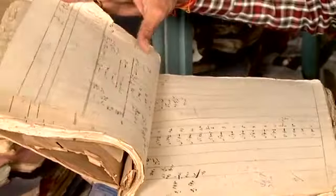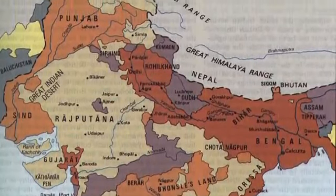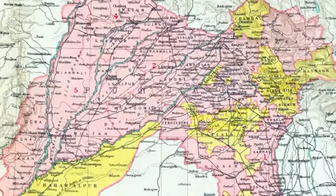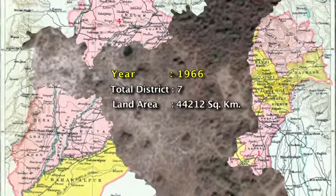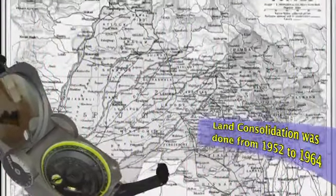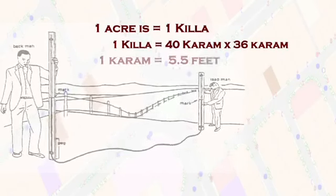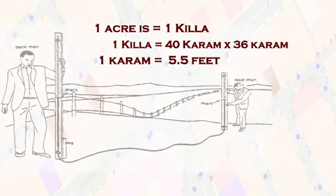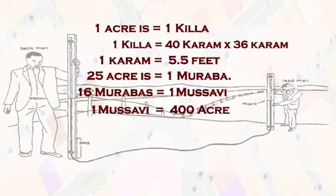Haryana's land record is as old as the Mughal and British periods. The last land settlement was held in 1909–10 in joint Punjab during the British period. Haryana, upon separation from Punjab in 1966, had seven districts and a land area of 44,212 square kilometers. Now there are 21 districts and 7,085 villages. After independence, land consolidation was done from 1952 to 1964 in joint Punjab. Land was divided into uniform grids of acres; each acre is called a Killa having a dimension of 40 Karams into 36 Karams, and each Karam equals 5.5 feet. The lowest unit of land measured is the Karam.